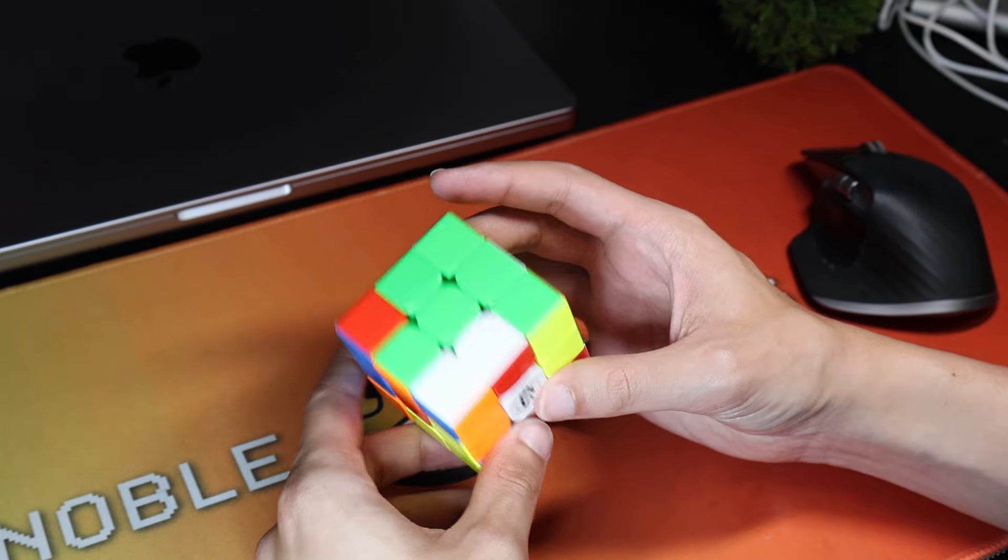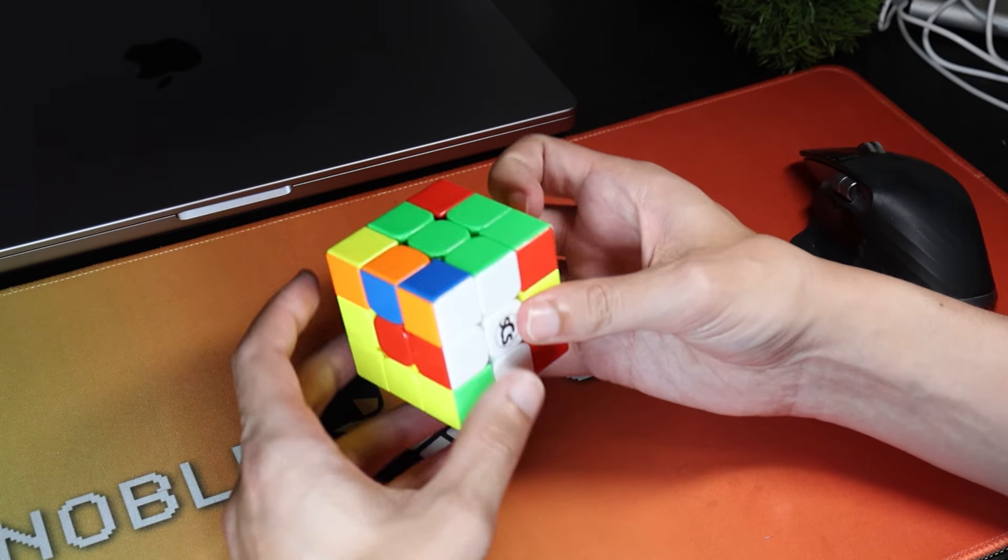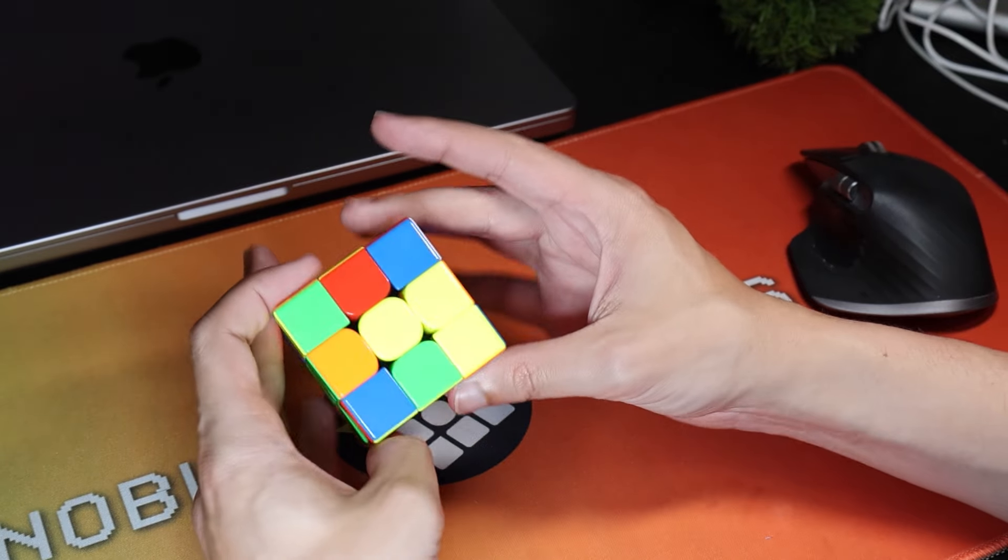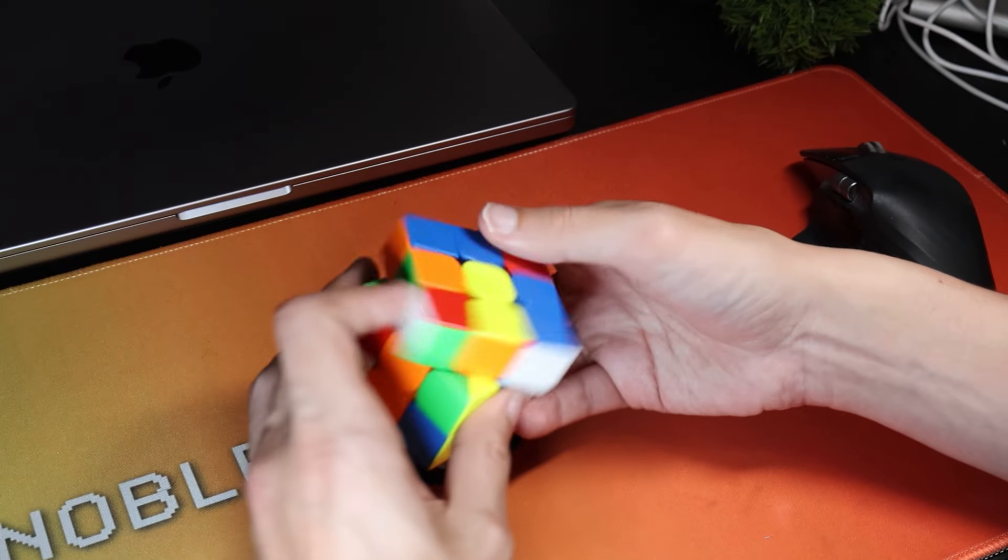Looking back on it, a more normal way I could have done it is inserting these two in here and then just going like that and inserting the orange. And then there's actually some nice pairs that form. There's like this one.